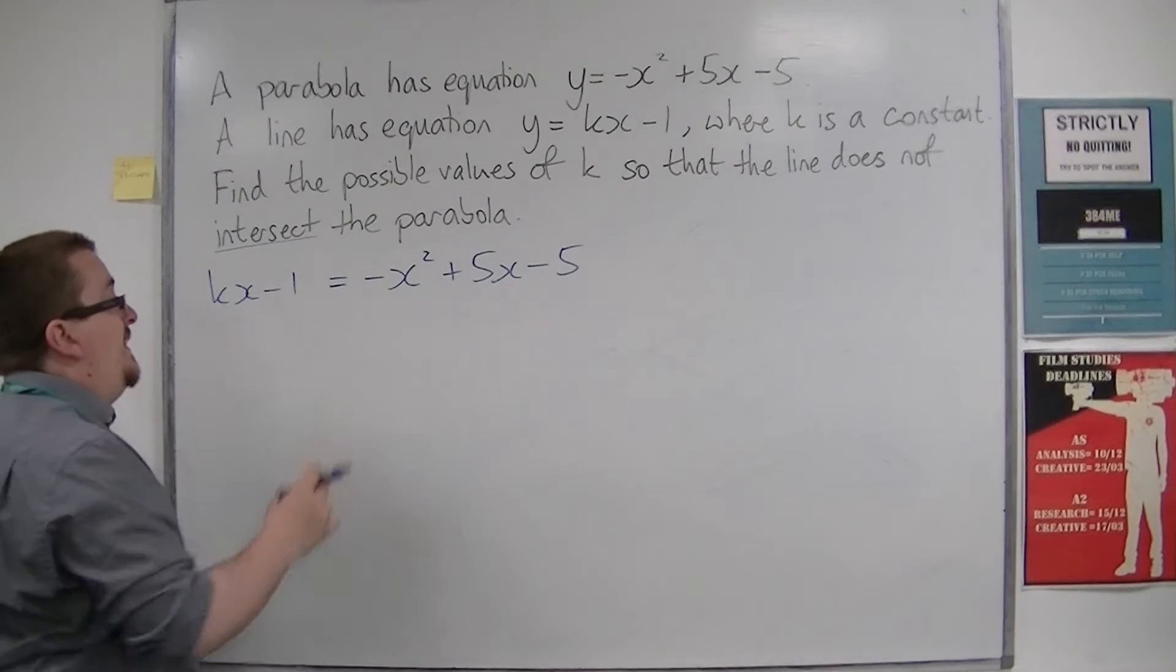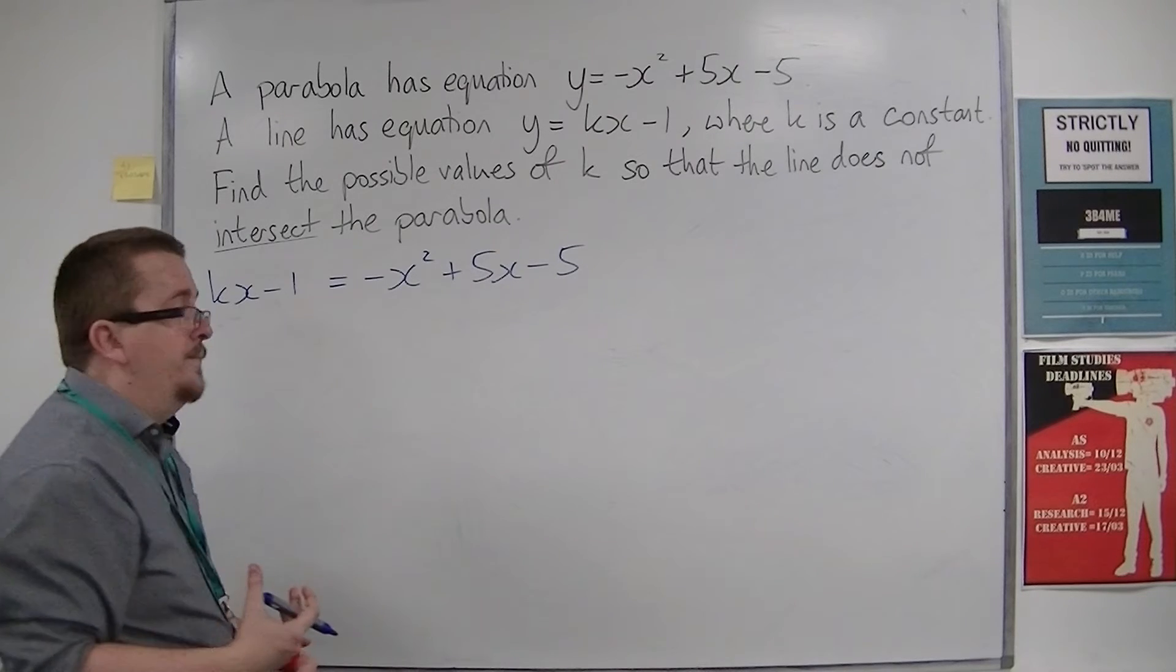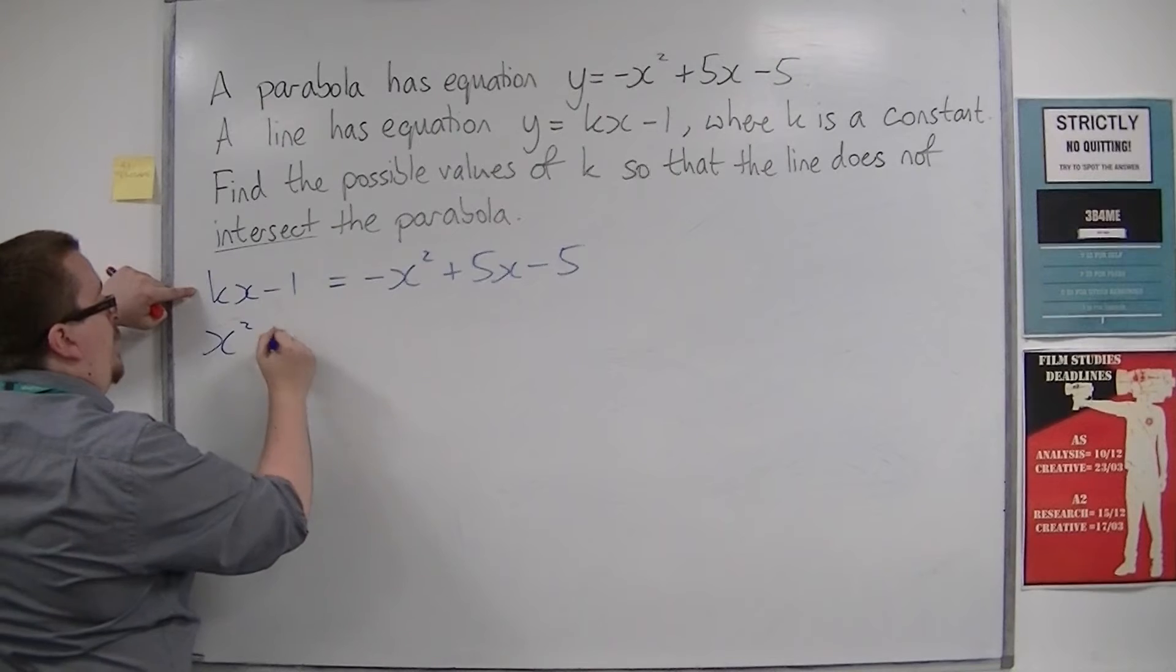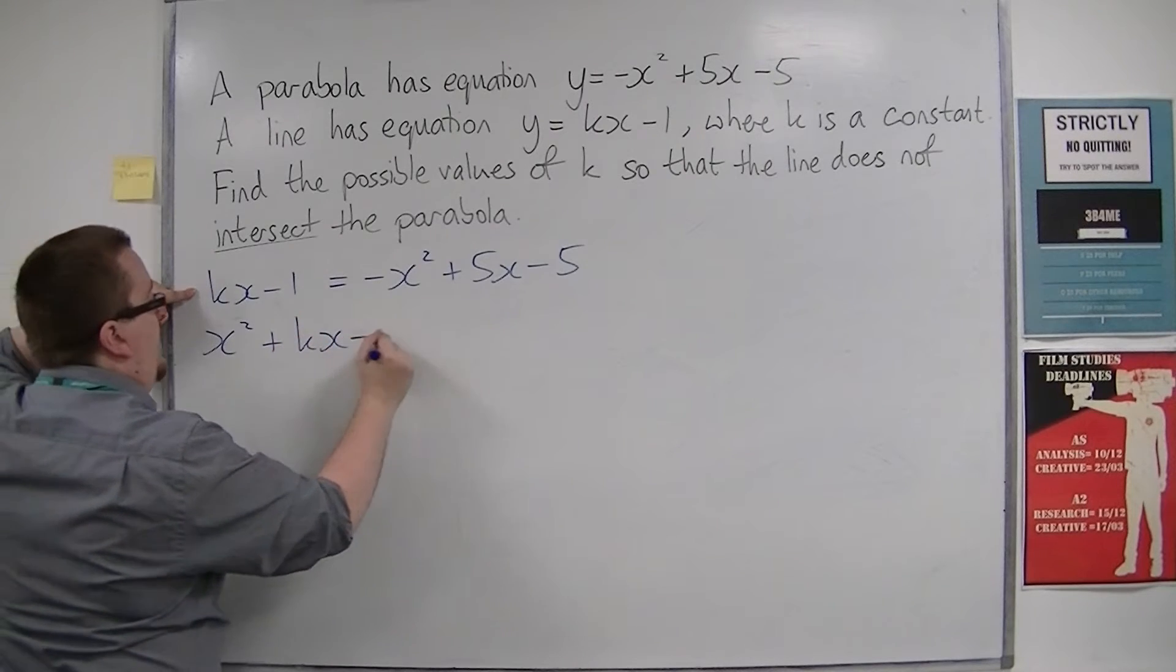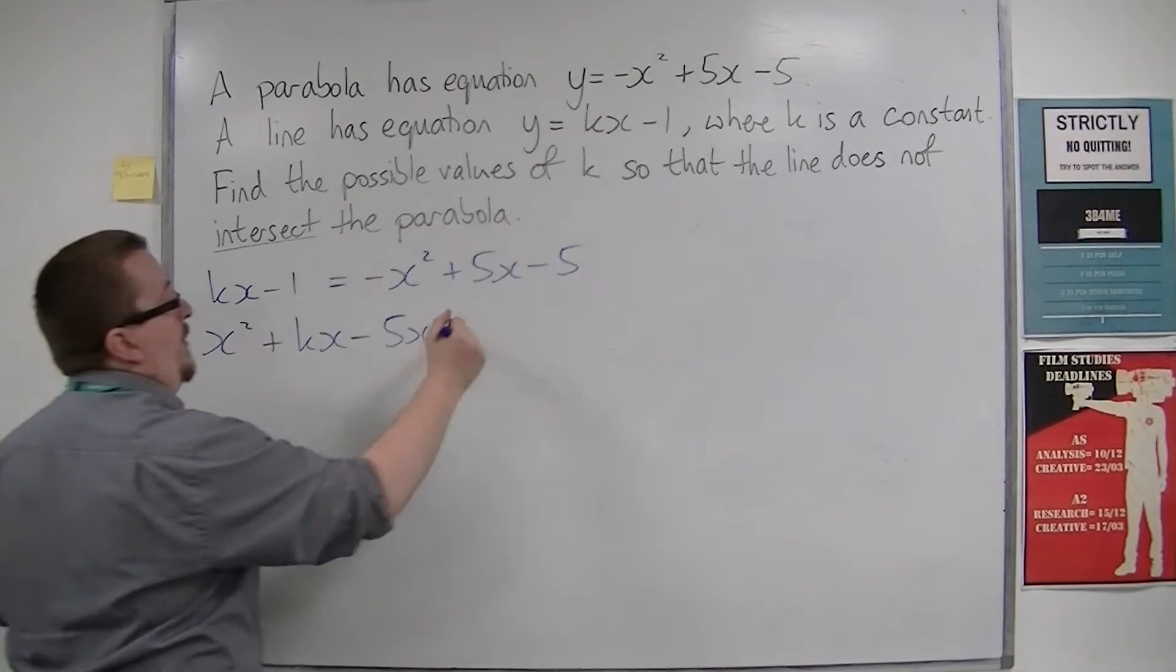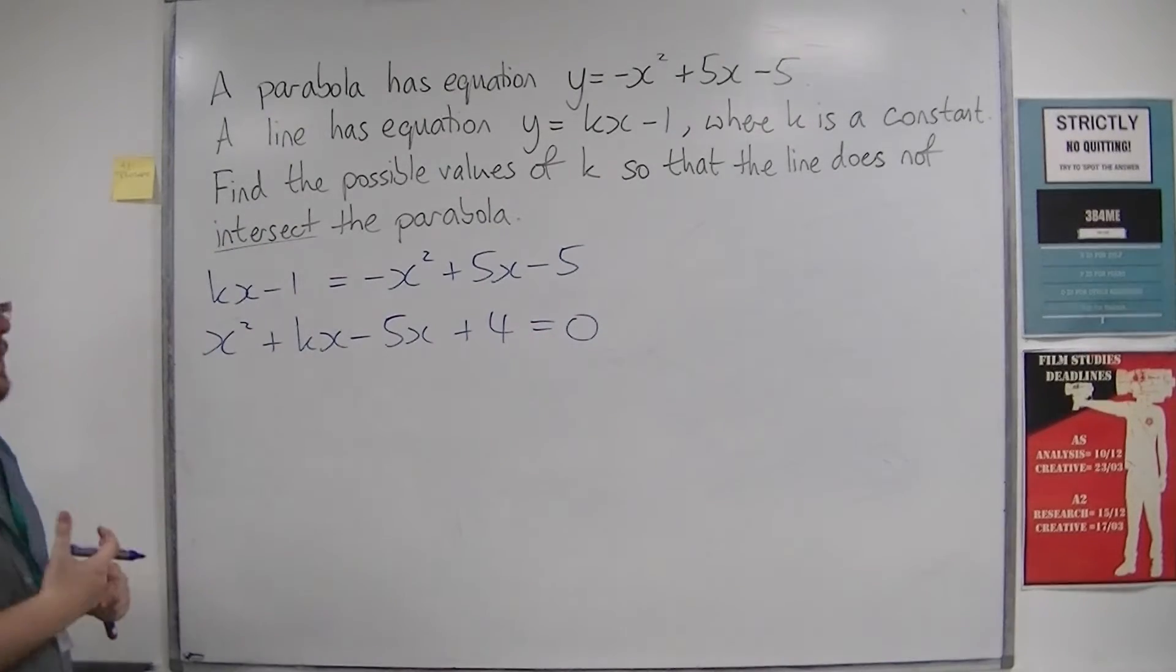Now I'm going to tidy this up. So I want to move everything onto one side of the equation. I'm going to add x squared to both sides, take 5x from both sides, so I'll have kx minus 5x. And then I'm going to add 5 to both sides. Minus 1 plus the 5 will be plus 4 equals 0.